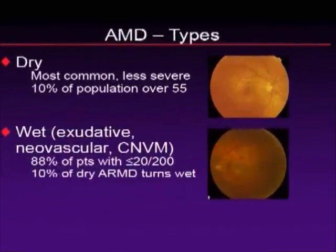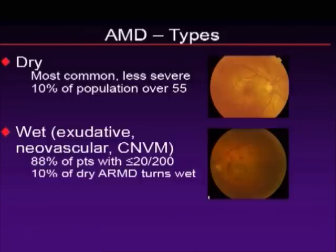There are two types of macular degeneration. There's a dry form, which is the more common and less severe form, affecting about 10% of the population over 55. And then there's the wet form of macular degeneration, which causes the majority of blindness — responsible for about 88% of those with legally blind vision. Historically, about 10% of dry turns wet per year.